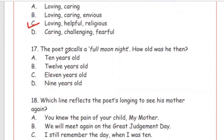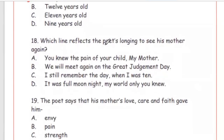Question 17: The poet recalls a full moon night — how old was he then? Option A, 10 years old. Question 18: Which line reflects the poet's longing to see his mother again? Options include 'You knew the pain of your child,' 'We will meet again on the great judgment day,' 'I still remember when I was 10,' and 'My world only you knew.' The answer is Option B — 'We will meet again on the great judgment day.'